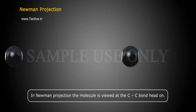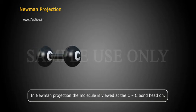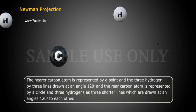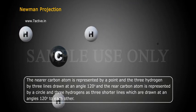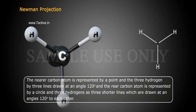In a Newman projection, the molecule is viewed along the C-C bond head-on. The near carbon atom is represented by a point, with the three hydrogens shown as three lines drawn at an angle of 120 degrees to each other.